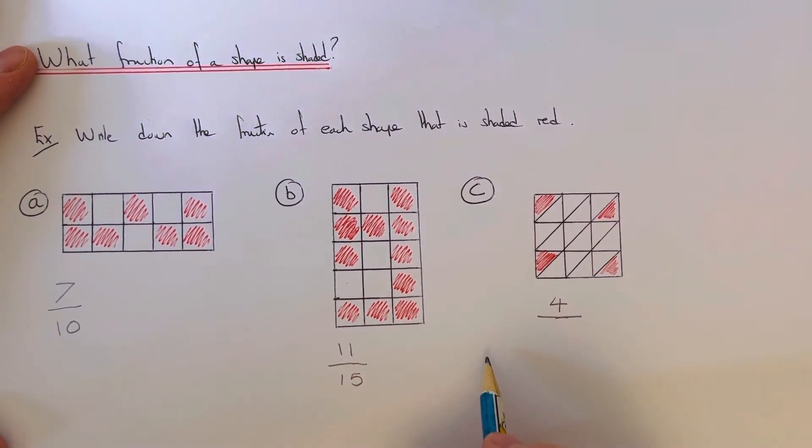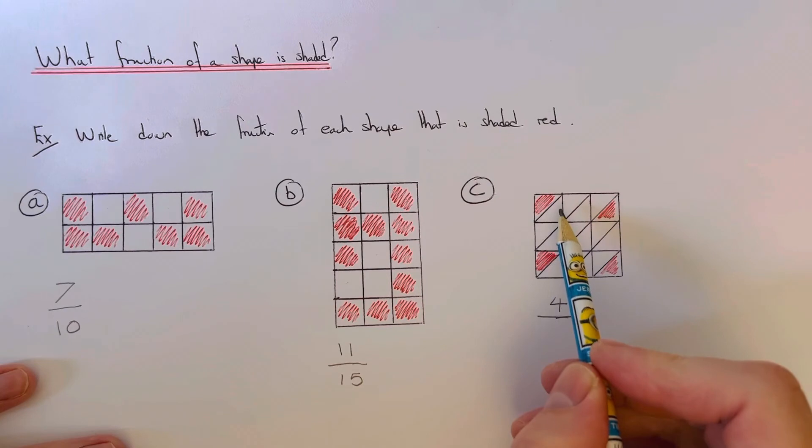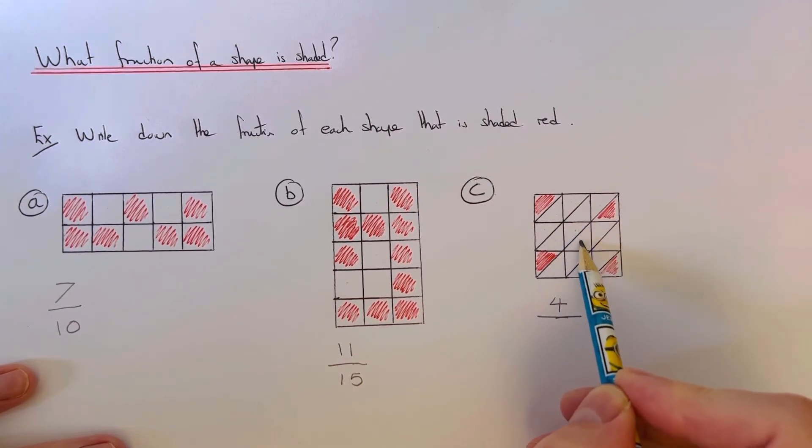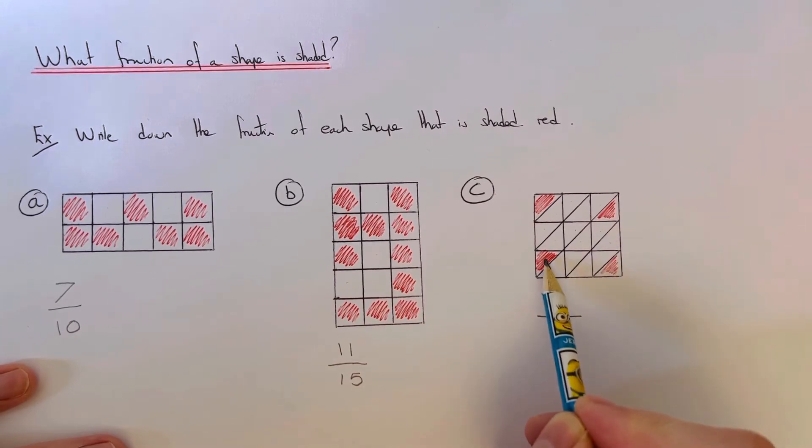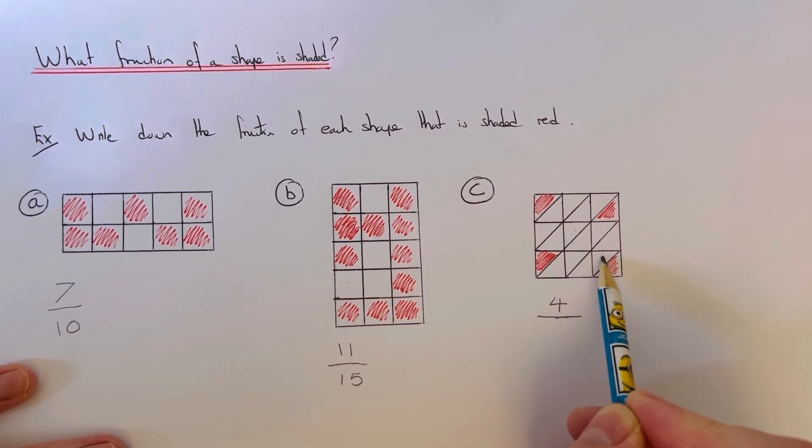And then on the denominator of the fraction, we need to count the total amount of triangles we have. We've got one, two, three, four, five, six, seven, eight, nine, ten, eleven, twelve, thirteen, fourteen, fifteen, sixteen, seventeen, eighteen. So we have four-eighteenths of our shape which is shaded.